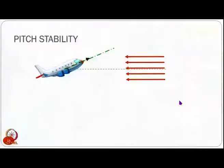Let us talk about the aerodynamic stability of airships. Let us start with pitch stability. Earlier in the dynamics lecture, we had talked about the conventions that we have. By that convention, we can define the angle of attack direction.